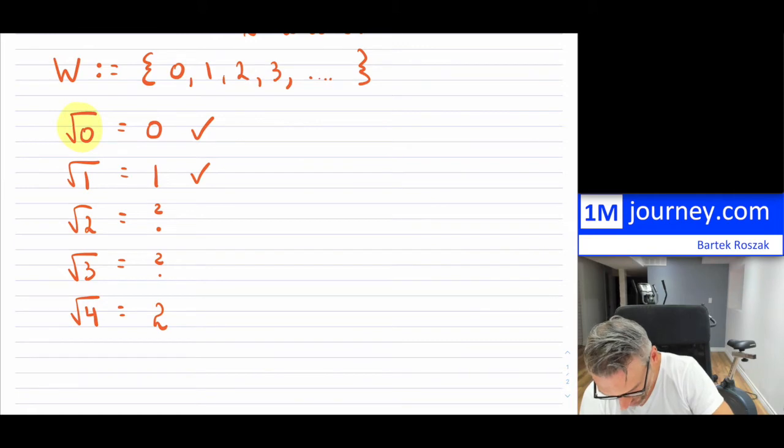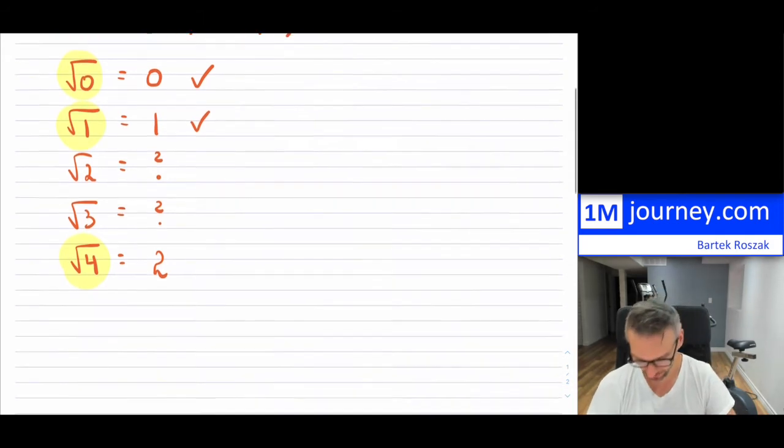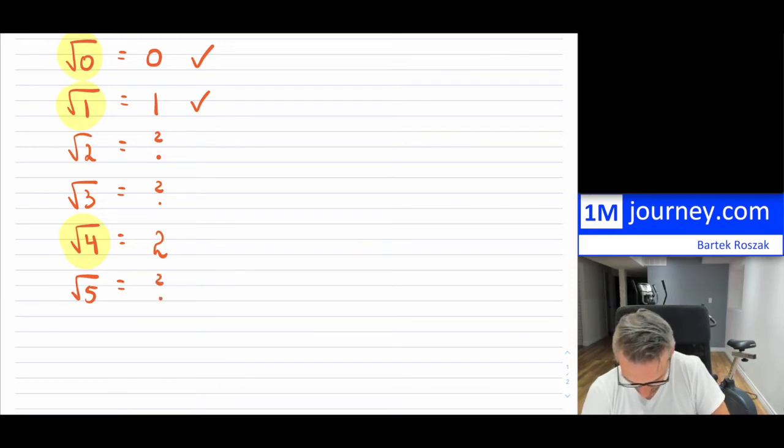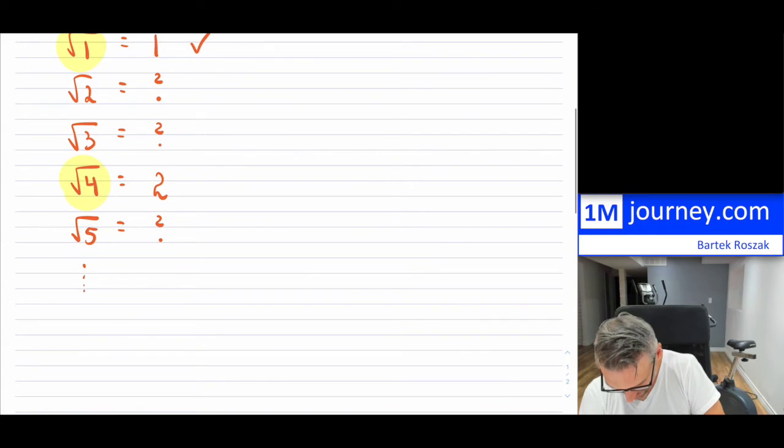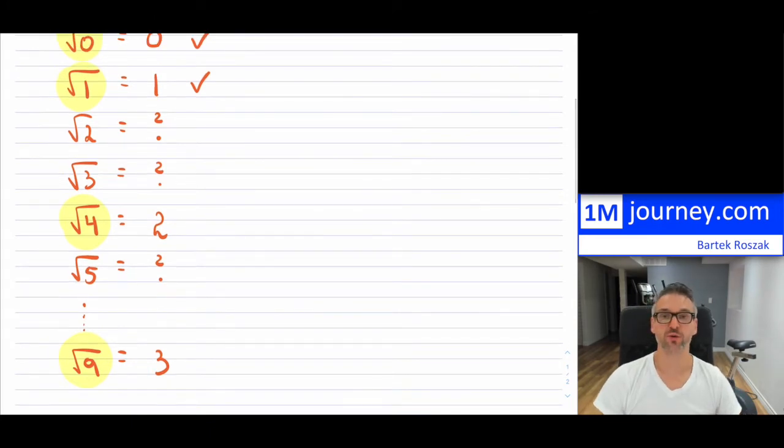So the pattern is, okay, so notice that we have these, which we know the answer to pretty quickly. Now, I can continue this pattern. So then it'll be 5. I'm not so sure about that one, you know, and then continue on. And then eventually, you know, I'm going to get to square root of 9, which I know is 3. And again, this is kind of part of the pattern.